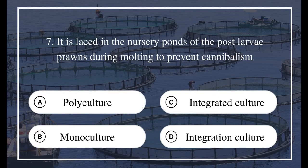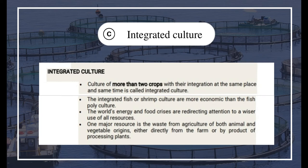Question 7: Culture of more than two crops with their integration at the same place and same time. A) polyculture, B) monoculture, C) integrated culture, D) integration culture. The answer is C) integrated culture. The integrated fish or shrimp culture is more economic than fish polyculture. The world's energy and food crises are redirecting attention to a wiser use of all resources, one major resource being waste from agriculture of both animal and vegetable origins.